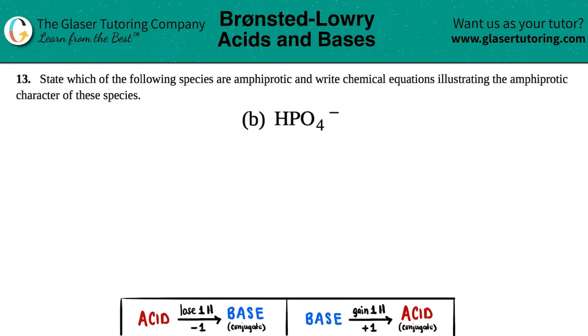Number 13: State which of the following species are amphiprotic and write chemical equations illustrating the amphiprotic character of these species. We have letter b, HPO4 minus. Before we do that, I just want to say I think there might be a little bit of a mistake here.